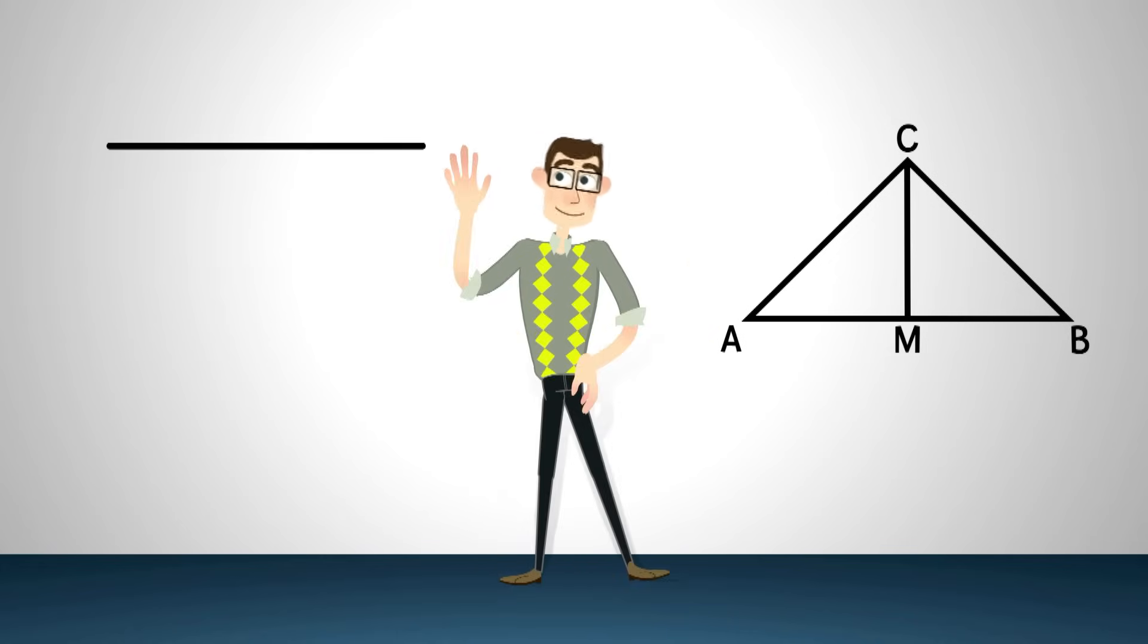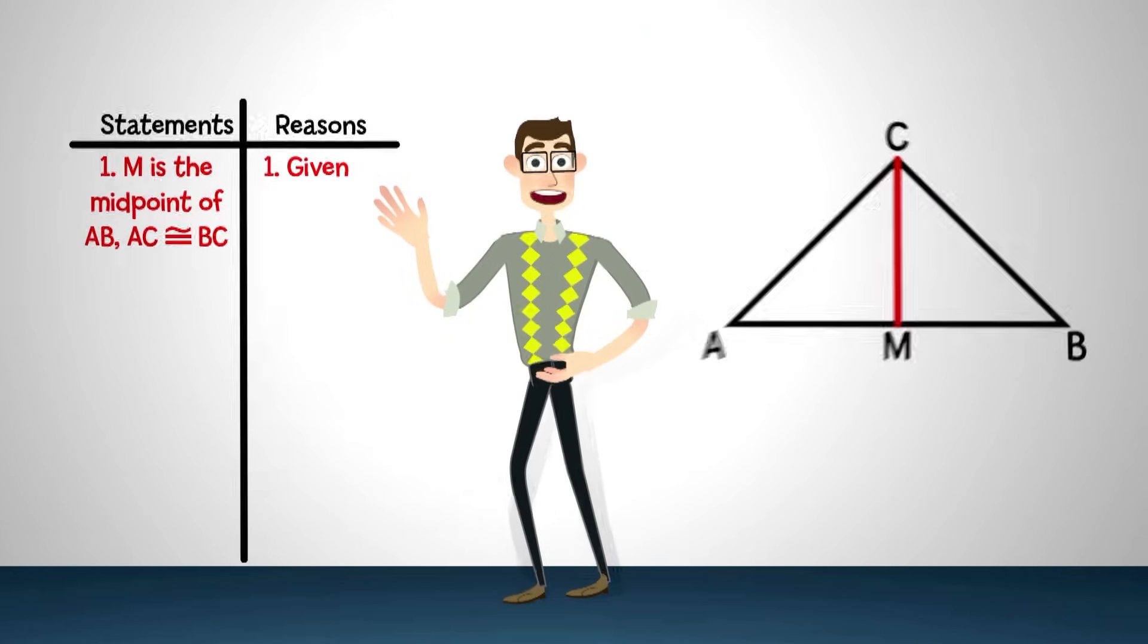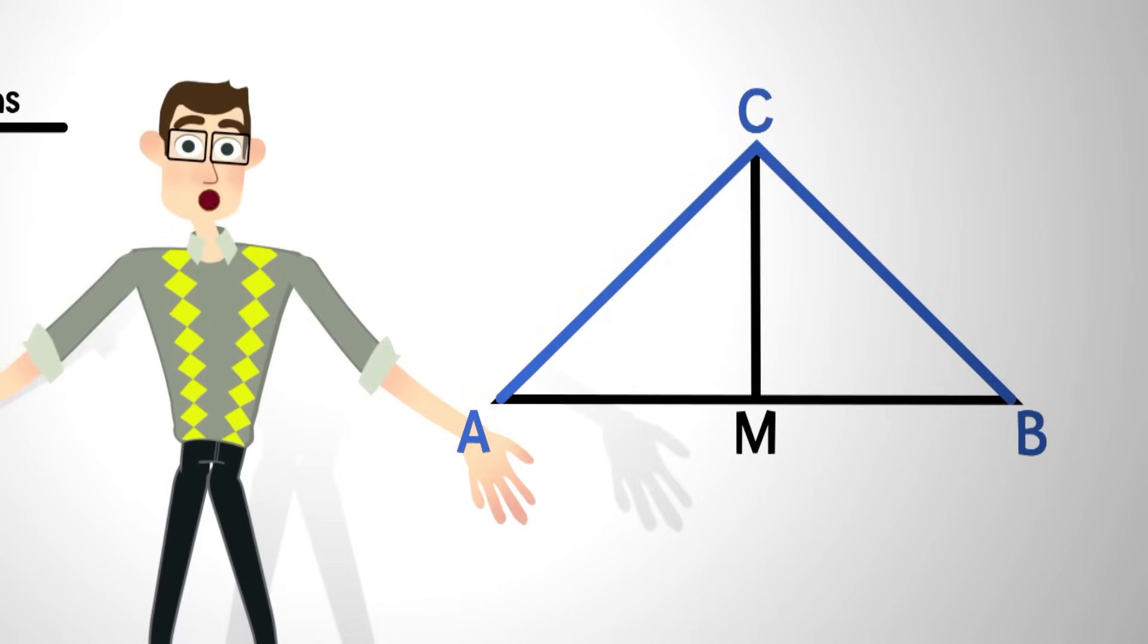So how do we prove it? First, I'll write down what we know. We know that point M is the midpoint of AB. We also know that sides AC and BC are already congruent.